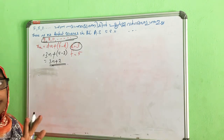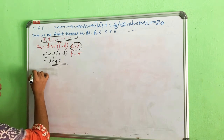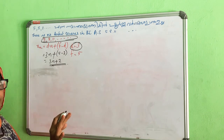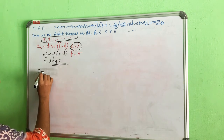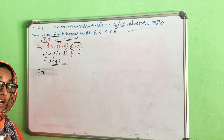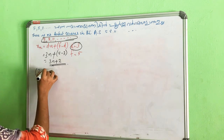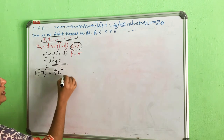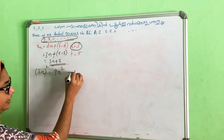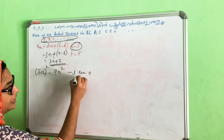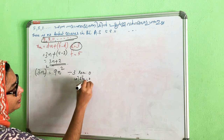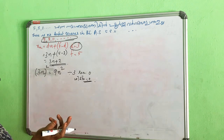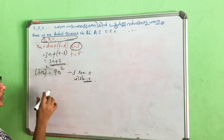Any integer n can be written in one of three forms: 3n, 3n+1, or 3n+2. If n = 3n, then n² = 9n², and when divided by 3 the remainder is 0. When n = 3n+1, the remainder when n² is divided by 3 is 1.